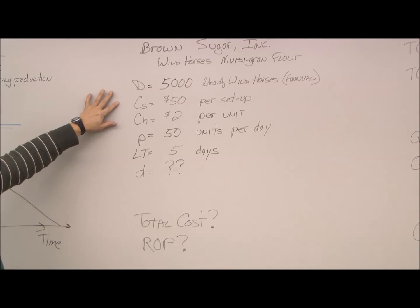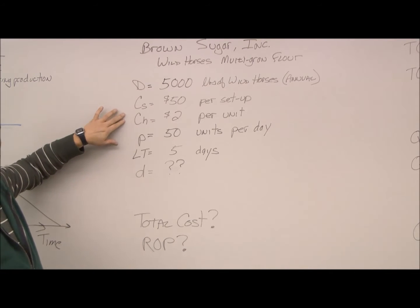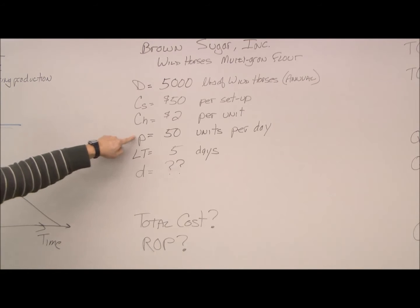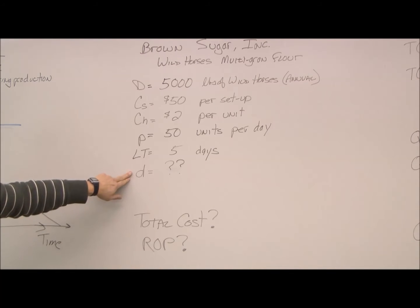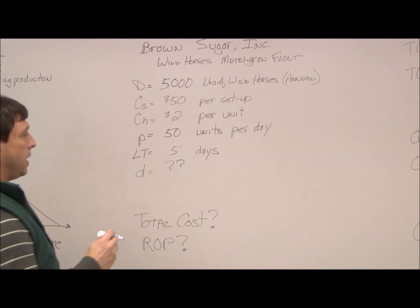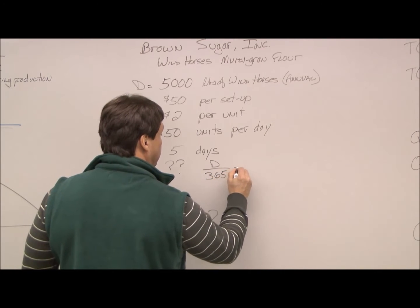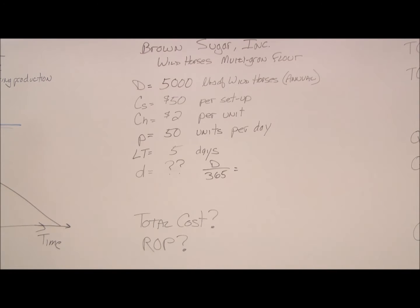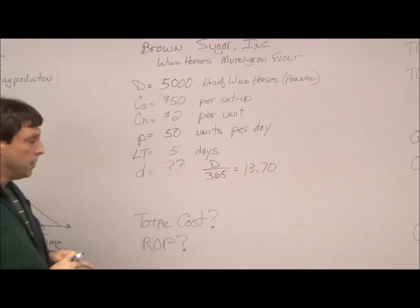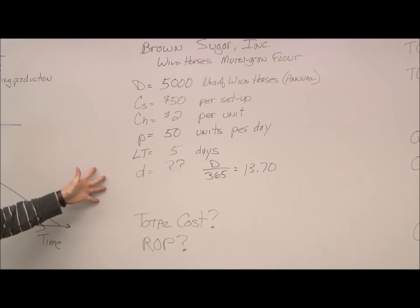The per-unit setup cost, or every time we go to produce a batch of Wild Horses, will cost us $50 to set up. If we decide to hold a bag, a one-pound bag in inventory, it's going to cost us $2 per unit. Our production, our daily production quantity, we can produce up to 50 bags a day. Our lead time for a reorder point is five days. First thing we have to do is figure out what is our daily demand. The daily demand is pretty easy to figure out. So we just take our annual demand and divide it by how many days we're working, work days. In this example, we're going to use 365, but as you'll see in class, we can use other days. So this is simply 5,000 divided by 365, which is 13.7.